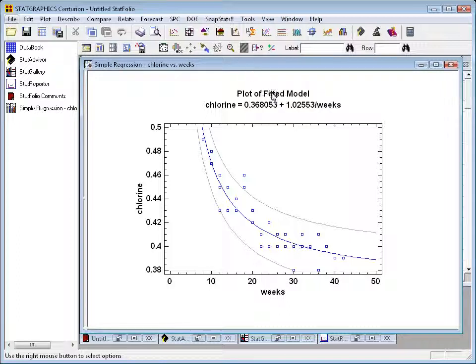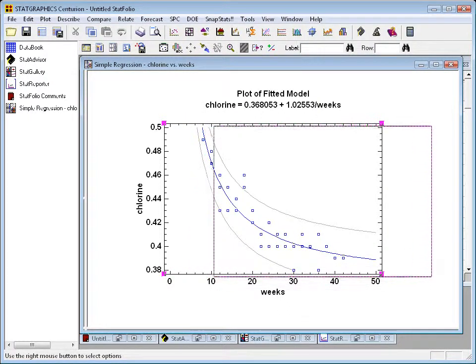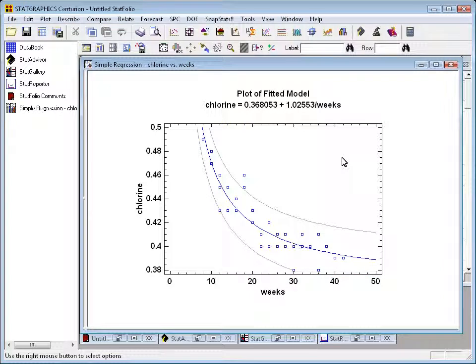To dress up the graph a little bit for publication purposes, the first thing I'm going to do is take the graph and click with my left mouse somewhere in the middle of the graph. I'm then going to pull the graph over to the right, which will give me a little bit more room for the graphics options dialog box I'm going to call up.